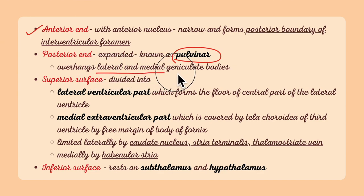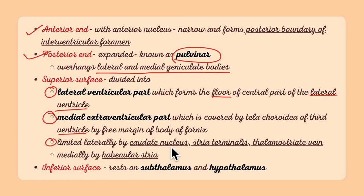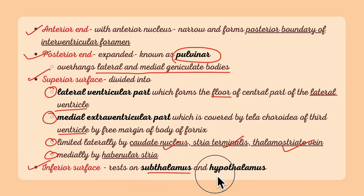The pulvinar overhangs the lateral and medial geniculate bodies. The superior surface is divided into a lateral ventricular part and a medial extraventricular part. The lateral ventricular part forms the floor of the central part of the lateral ventricle, while the medial extraventricular part is covered by the tela choroidea of the third ventricle. These structures are limited laterally by the caudate nucleus, stria terminalis and thalamostriate vein, and medially by the habenular stria. The inferior surface rests on the subthalamus and the hypothalamus.